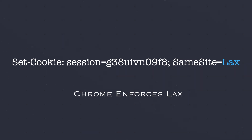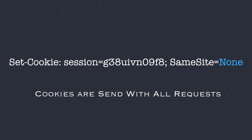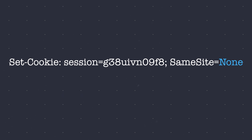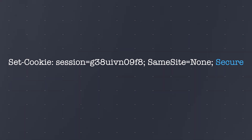Since 2021, Chrome enforces lax by default, making it the standard. The none attribute disables same-site restrictions, allowing cookies to be sent with all requests to the issuing site. This is the default for most browsers, except Chrome. It's useful for third-party contexts, like tracking cookies where no sensitive data is involved. If you encounter a cookie set with same-site none or with no explicit restrictions, it's worth investigating whether it's of any use. Additionally, a website should also add the secure attribute, meaning the cookie will only be sent over secure encrypted HTTPS connections, otherwise browsers will not accept the cookie.